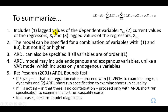To summarize, the ARDL model includes lag values of the dependent variable Y, current values of the independent variable X, and most importantly, lag values of the explanatory variable. The model can be specified for a combination of I(1) and I(0) variables, but definitely not I(2) or higher. It can also be specified if all variables are of order I(1), so if you don't wish to use Johansen's test of cointegration and then proceed to an error correction model, you can simply use ARDL.